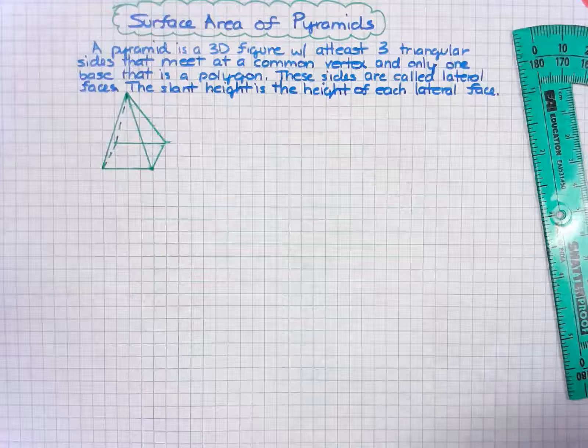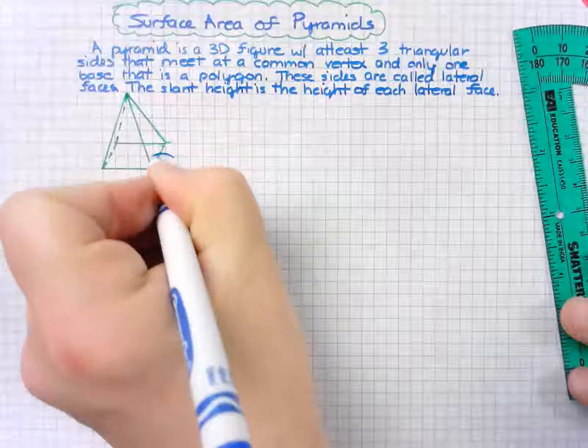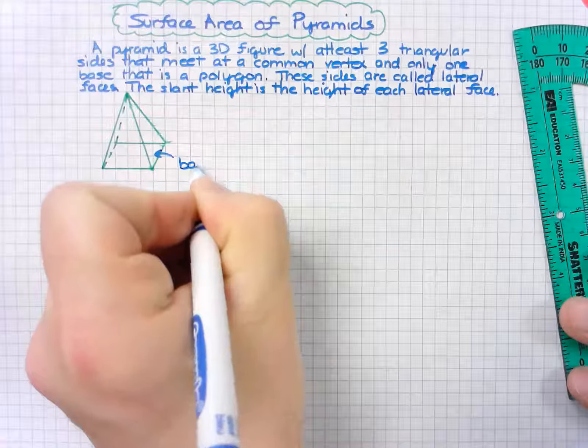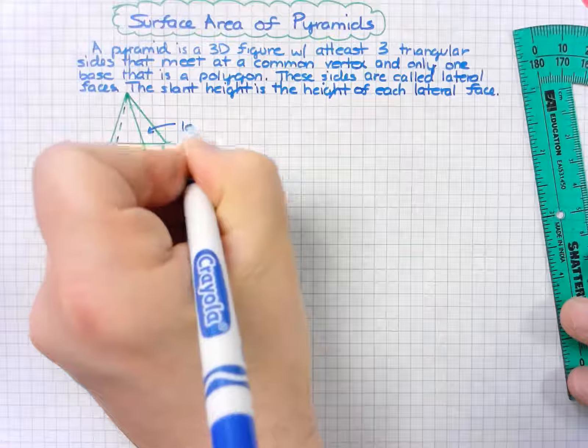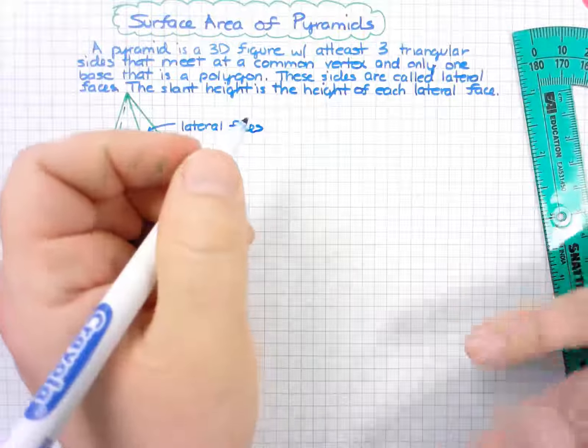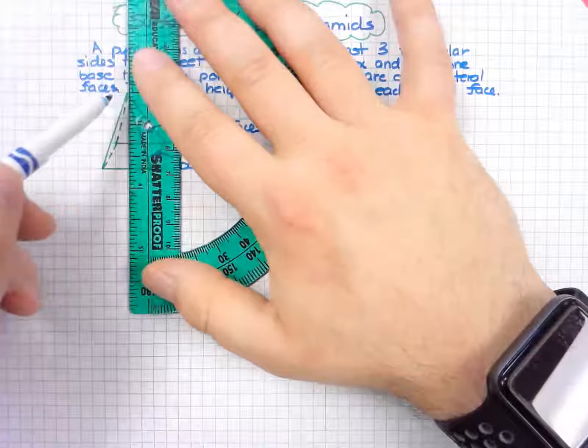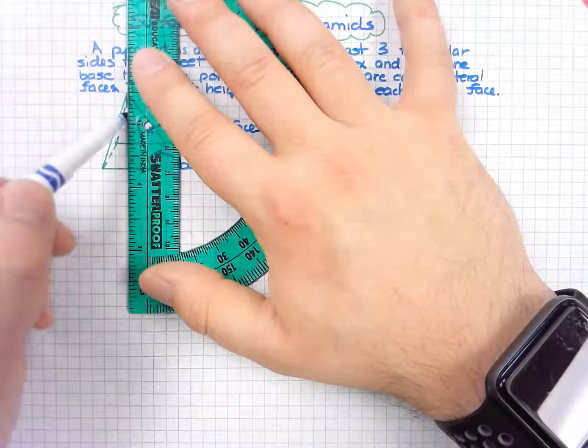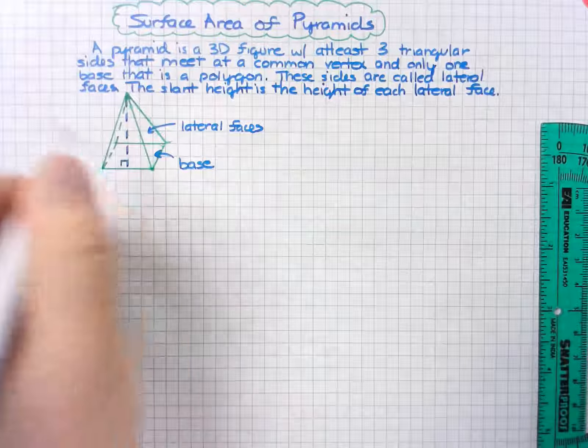Now we see that we have a base. These are called lateral sides, or lateral faces. Then we have a slant height. This, from the vertex to the edge at a right angle, is our slant height.